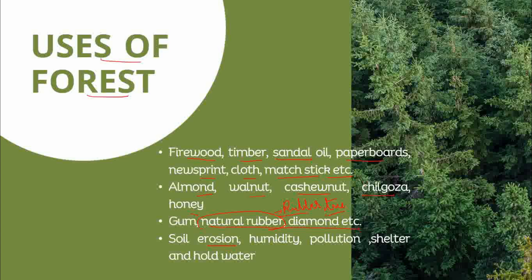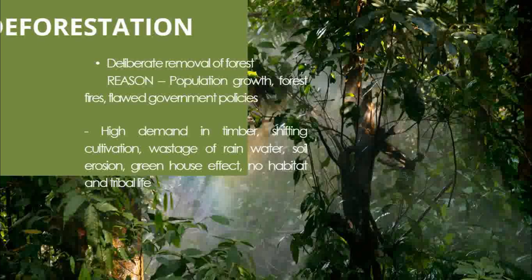Forest prevents soil erosion — the roots of trees hold the soil in place. Forest also helps maintain humidity. When there is forest cover in an area, it prevents pollution and provides shelter. Forests also hold water and act as a sponge, absorbing water in the area. These are the uses of the forest.